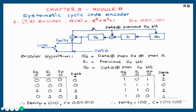The first example is a 7,4 cyclic code encoder with the generator polynomial x³ + x² + 1. After implementing the cyclic code encoder for the given data 0011 and 1011, we can generate the parity bits also.